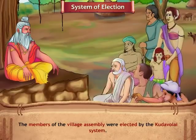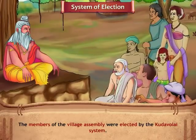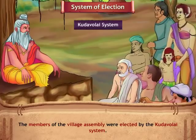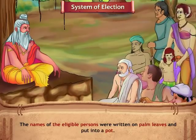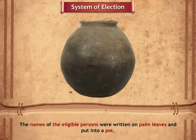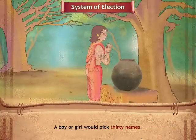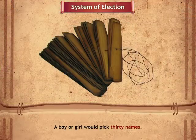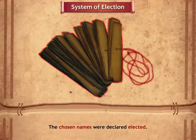The members of the village assembly were elected by the Kudavolai system. The names of the eligible persons were written on palm leaves and put into a pot. A boy or a girl would pick 30 names, and the chosen names were declared elected.